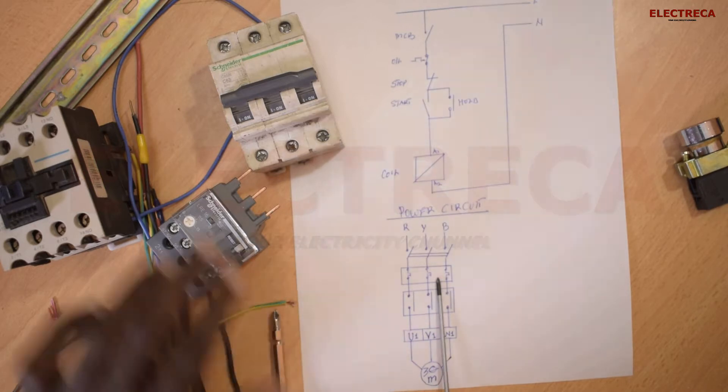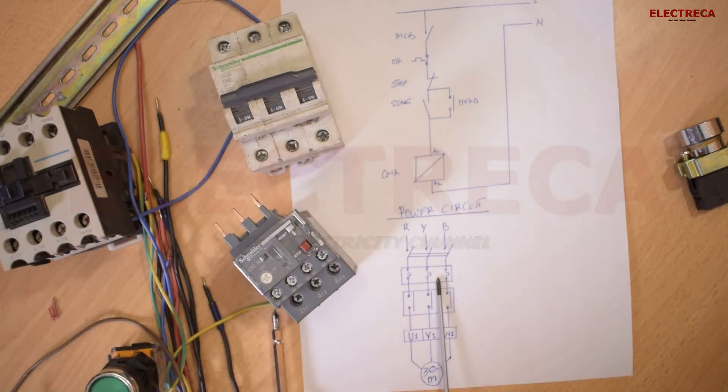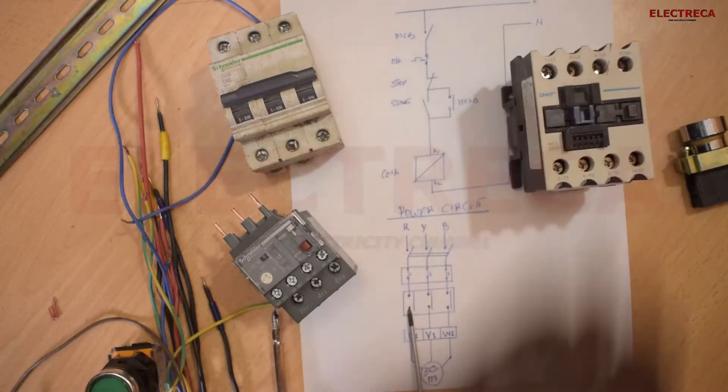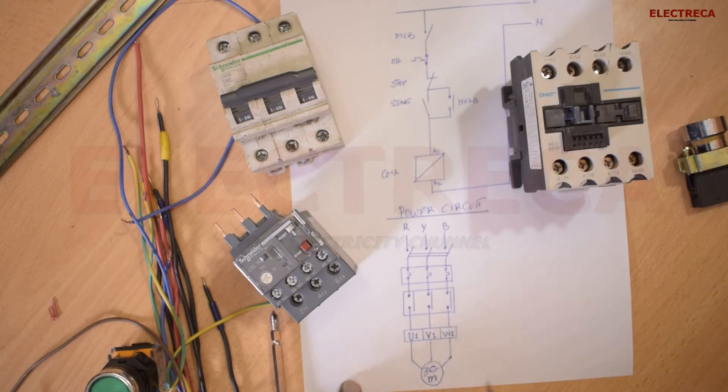Now from here you have got your MCCB here, triple pole, right here. Now down here below it you have got your overload relay which is this, and then you have got your contactor here, right here.